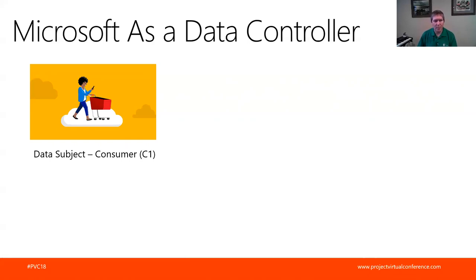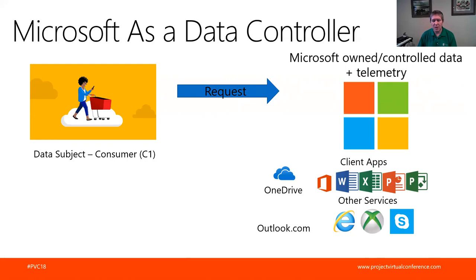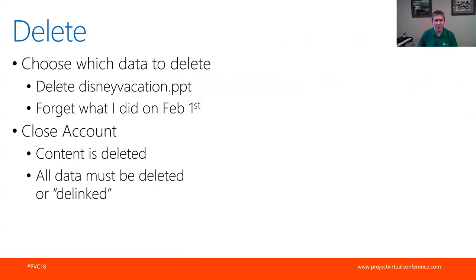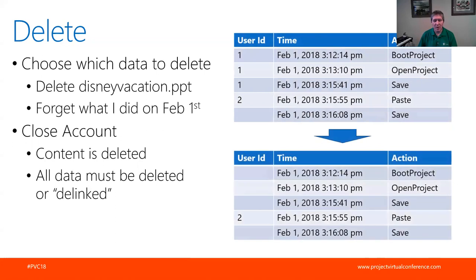There are various different roles that are played. Microsoft as a data controller is really when we're working with consumers - we can get a request from a consumer and they'll want their data, so we'll bring it all together and export it. There are pages you can go to where you can make those requests happen. In terms of deleting, you can choose which data to delete. You can ask for certain things to be forgotten - for example, we still have a record that somebody opened and saved a project on a given date, but we've deleted their user ID, so we've de-linked the data. It doesn't mean we have to delete the telemetry data; it just means we de-link it so we can't associate it with a person anymore.